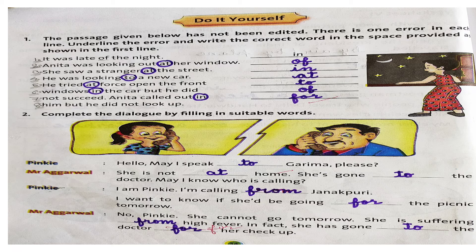Anita was looking out at her window. At toh istimal hote hai particular place ke liye, toh out of her window — apni khidki se bahar dekh rahi thi woh. She saw a stranger at the street. At nahi — street toh itni lambi hoti hai, there is no particular place, toh at particular space ke liye hoga, and yaha par hum in preposition use karenge. She saw a stranger in the street. He was looking to a new car — no, at a new car, kyunki car jo hai, it is a particular thing, toh we will be using at.